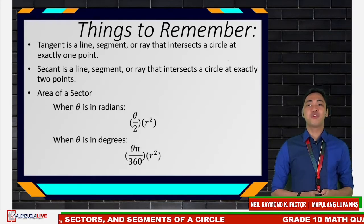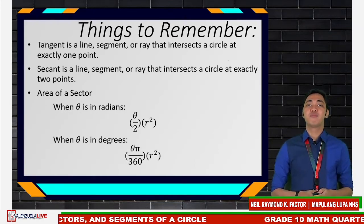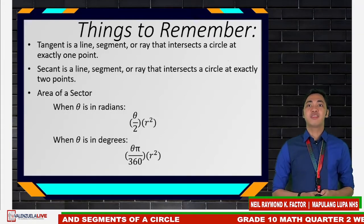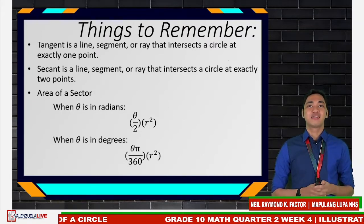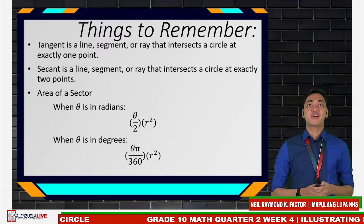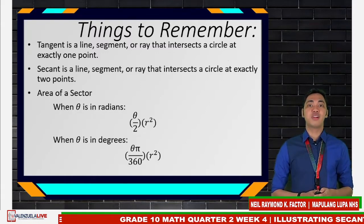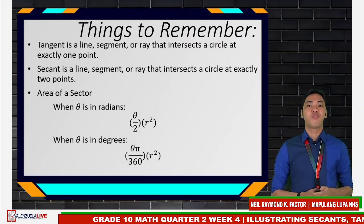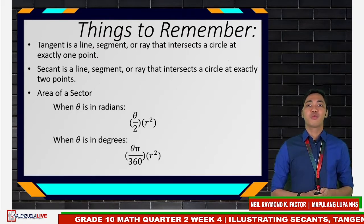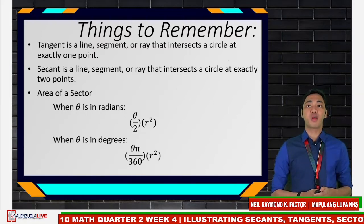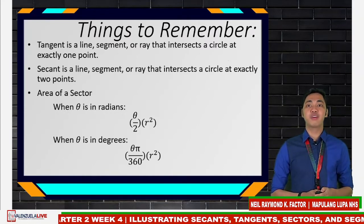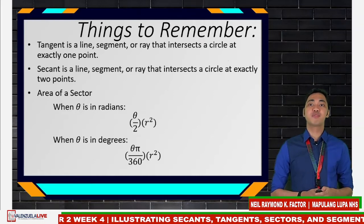Here are some things to remember in module number 5. Tangent is a line, a segment, or a ray that intersects a circle at exactly one point. Secant is a line, a segment, or a ray that intersects a circle at exactly two points. For the area of a sector: when theta is in radians, use theta over 2 times r squared; when theta is in degrees, use theta times pi over 360 times r squared.